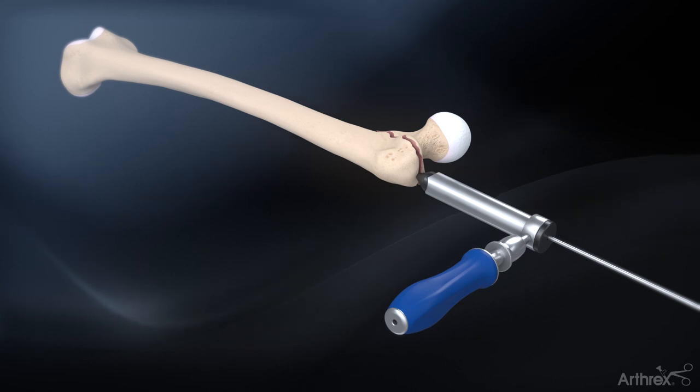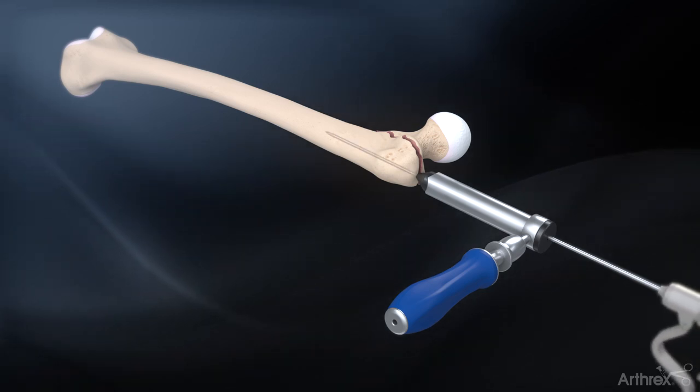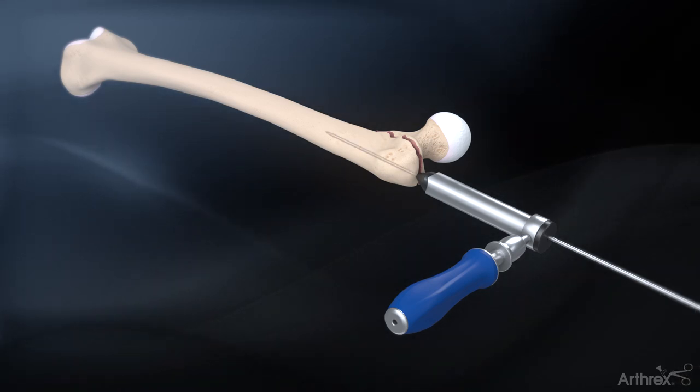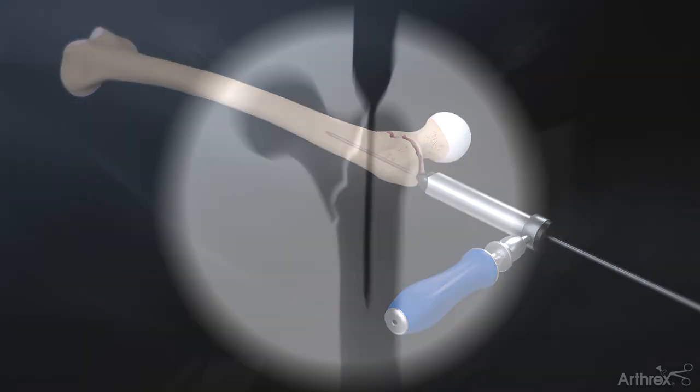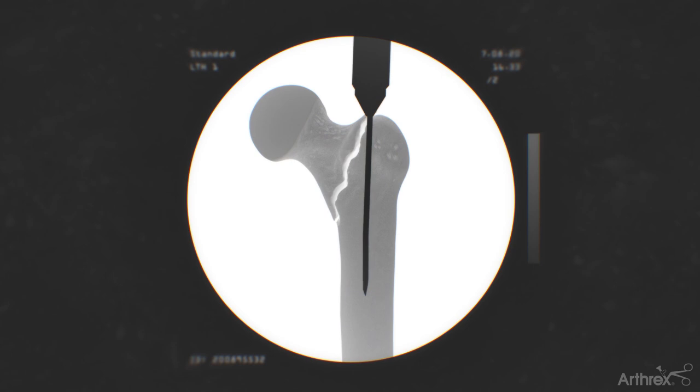Insert the 3.2 mm guide pin through the soft tissue protector and aim towards the central axis of the femoral shaft. Advance at least to the level of the lesser trochanter. The pin trajectory is verified through fluoroscopy.